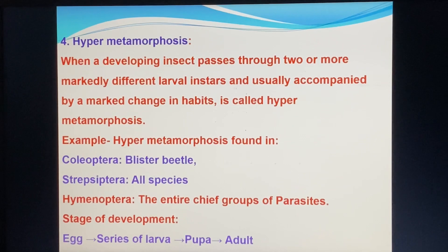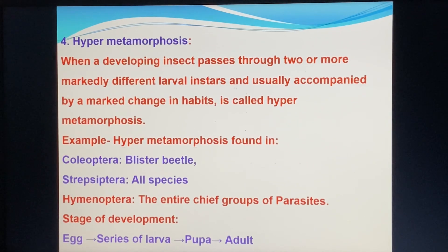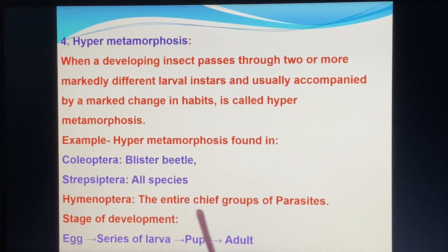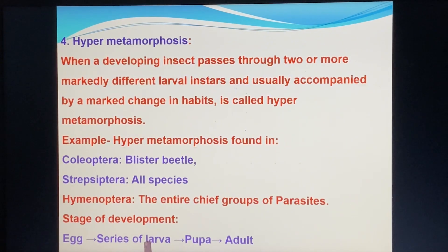For example, hypermetamorphosis is found in Polyploma — that is, blister beetles, Strepsiptera, Polystasis, hypermetamia — the internal parasites. The stages of development in hypermetamorphosis are: a series of larval stages, pupa, and adult.